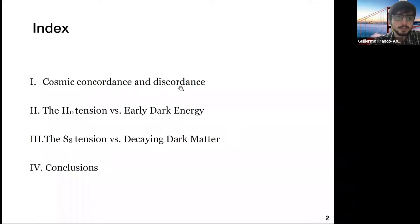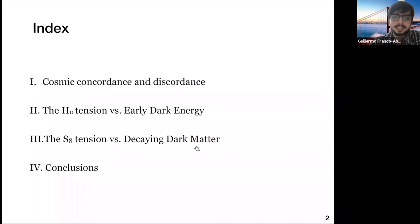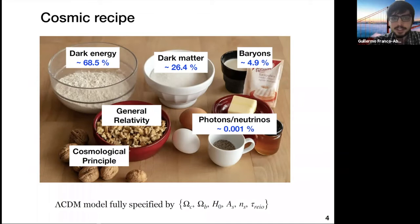This is the general structure of my talk. I will start with a general introduction to concordance and discordance in cosmology, then move to discuss the Hubble tension and how a model of early dark energy can resolve it. After that, I will talk about a different anomaly — the so-called S8 anomaly — and how it could be giving hints about a specific scenario of decaying dark matter.